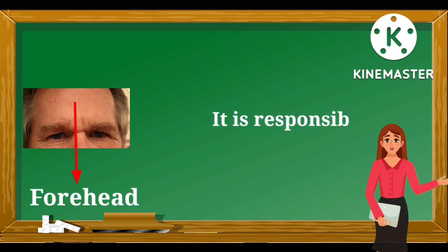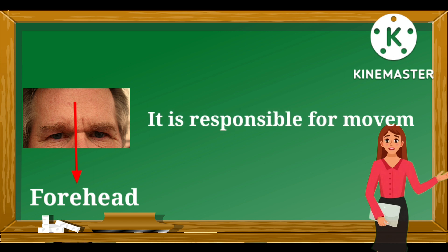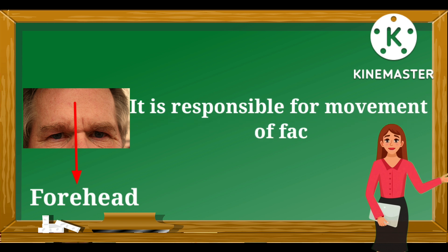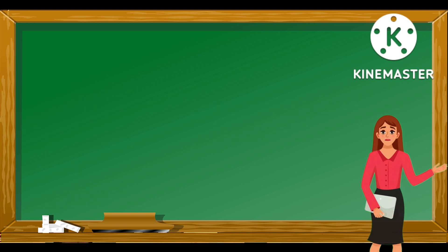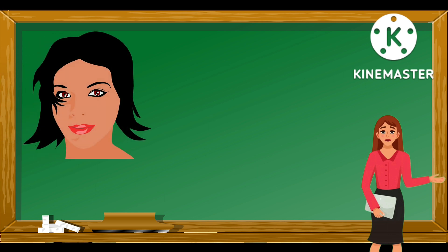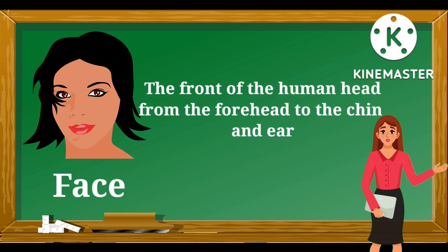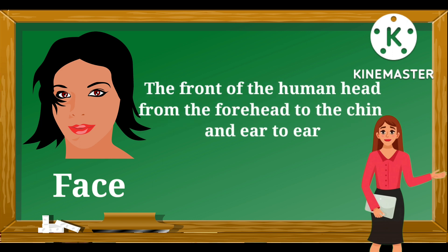This is a forehead — F-O-R-E-H-E-A-D. It is located at the top of the face, above the eyes. It is responsible for movement of facial muscles. This is a human face — F-A-C-E. The front of the human head consists of eyes, nose, chin, lips, and ears.